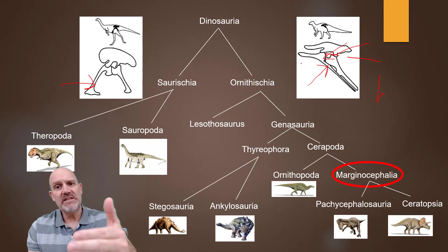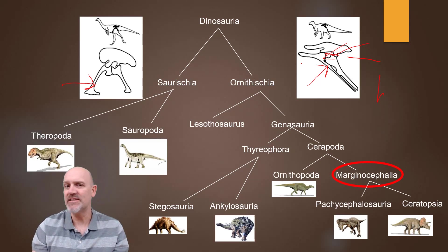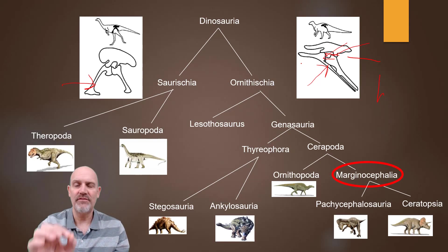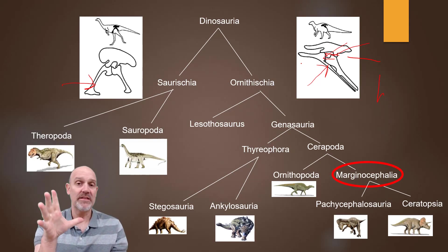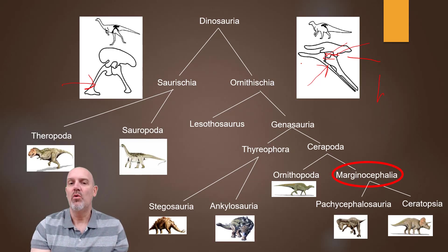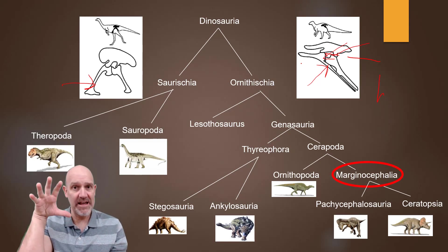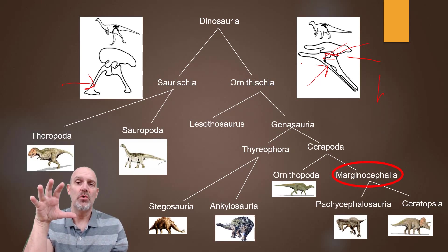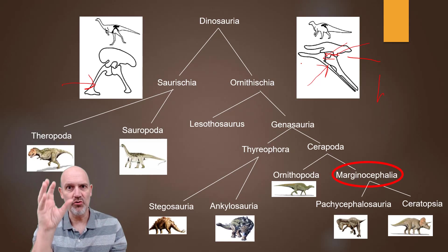Ornithischians break into Lesothosaurus and Genasauria. Lesothosaurus is just a genus — it's a dead end on the cladogram. However, Genasauria is not a genus; it's a very, very big taxonomic group. So again, you can think of it as clicking on it and it opens up like Russian nesting dolls, showing smaller groups.